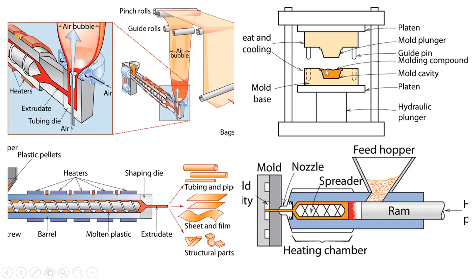In some cases you don't heat it all the way — you keep it between the glass transition and melting temperature. You can have a thermoplastic material where you don't want to melt it all the way down, just deform it a little bit below the melting temperature. So compression molding can work with a molten material, a liquid monomer for a thermoset, or even a solid if the deformation is not that significant.